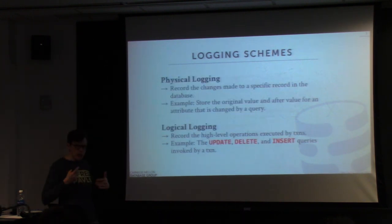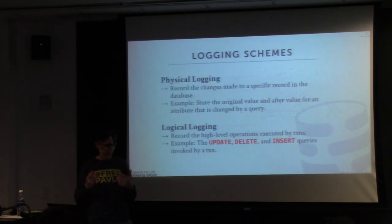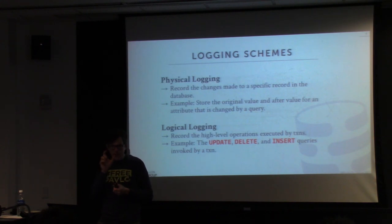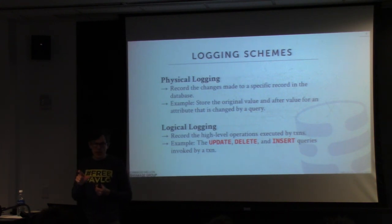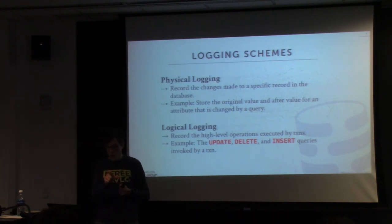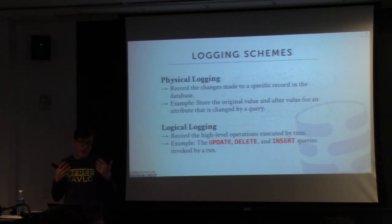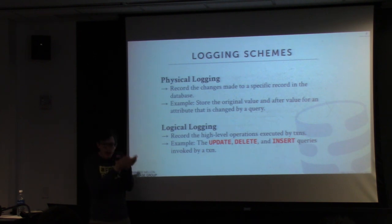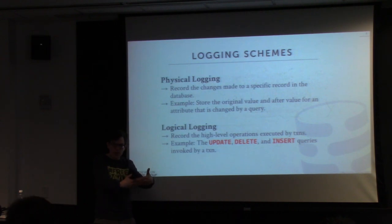There are two types of logging schemes in a database system. The first is physical logging, where you record all the low-level physical changes that transactions make to individual records in the log. For example, if I update a tuple and modify a value, I store in the log what the old value was and what the new value was.